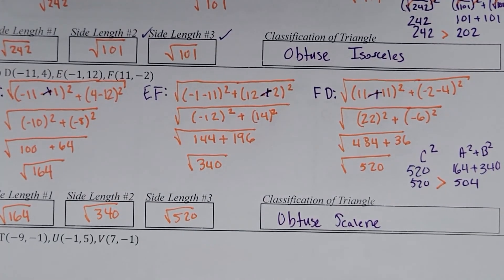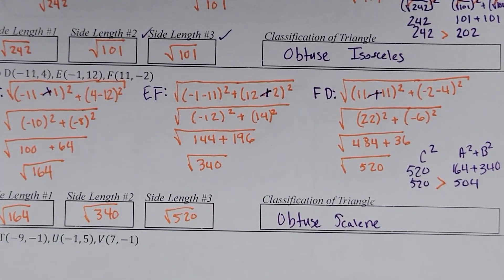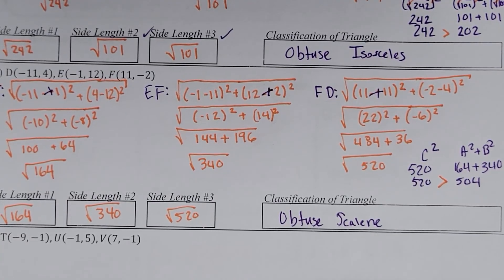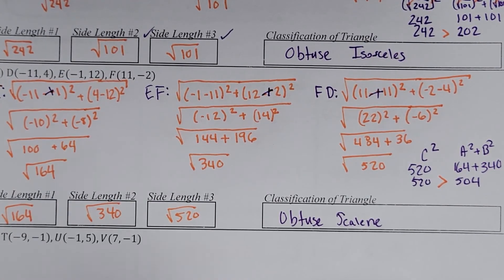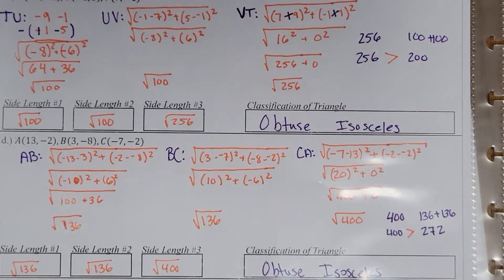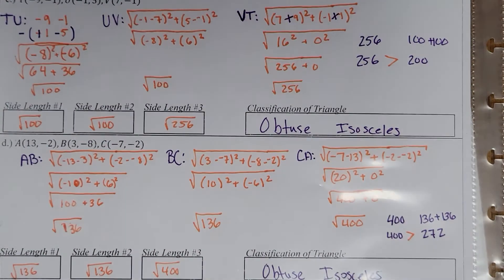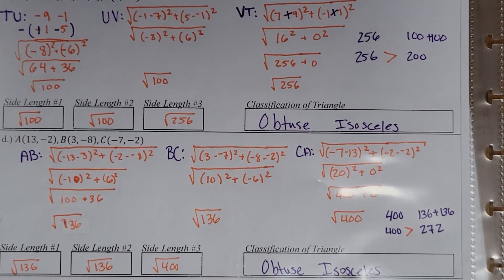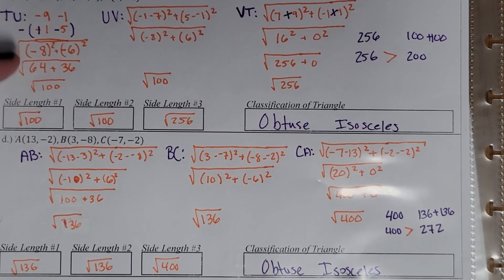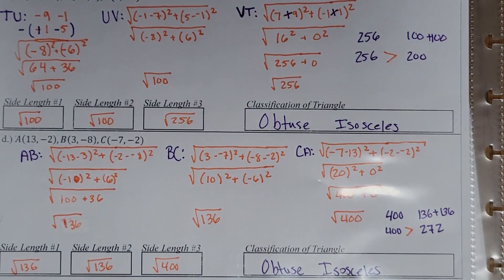I was going to do those two examples together, but go ahead and pause the video and try problems C and D yourself. See if you can figure it out and come back in a second — the answers will be given to you. The answers I got are obtuse isosceles for both of them. Make sure you pause it, take a look at the work, and figure out what happened. You choose what method makes sense to you. Obtuse isosceles and obtuse isosceles. Let us know if you have any questions — have a fantastic day.